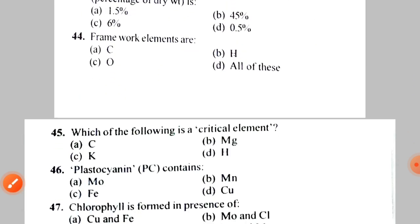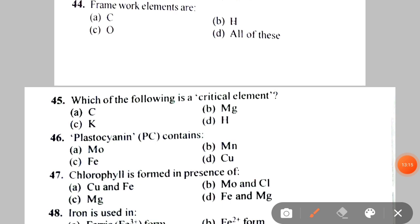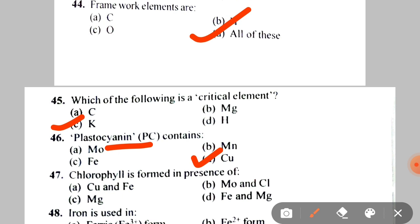Next: Plastocyanin (PC) contains A. Mo, B. Mn, C. Fe, D. Cu. Next: chlorophyll is formed in the presence of A. Copper and Iron, B. Molybdenum and Chlorine, C. Magnesium, D. Iron and Magnesium. The correct answer is D — Iron and Magnesium.